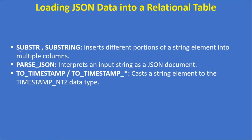In this process I am going to use these functions to achieve the expected output. The first function is substr or substring, a built-in function provided by Snowflake — it inserts different portions of a string element into multiple columns. The other function is parse_json, which interprets an input string as a JSON document. The third function is to_timestamp — a conversion function that casts a string element to the timestamp_ntz data type, converting a string into a timestamp format. Now let's start the demo.